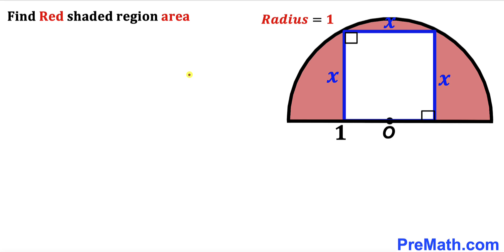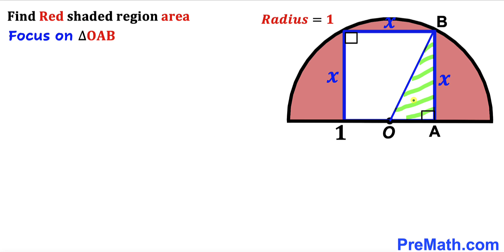Our very first step: before we can do anything else, we must find the value of X first. I have connected this center O with this point B, and as a result we got this right triangle OAB. We can see that this whole side length of this blue square is X, and this center O is the midpoint.